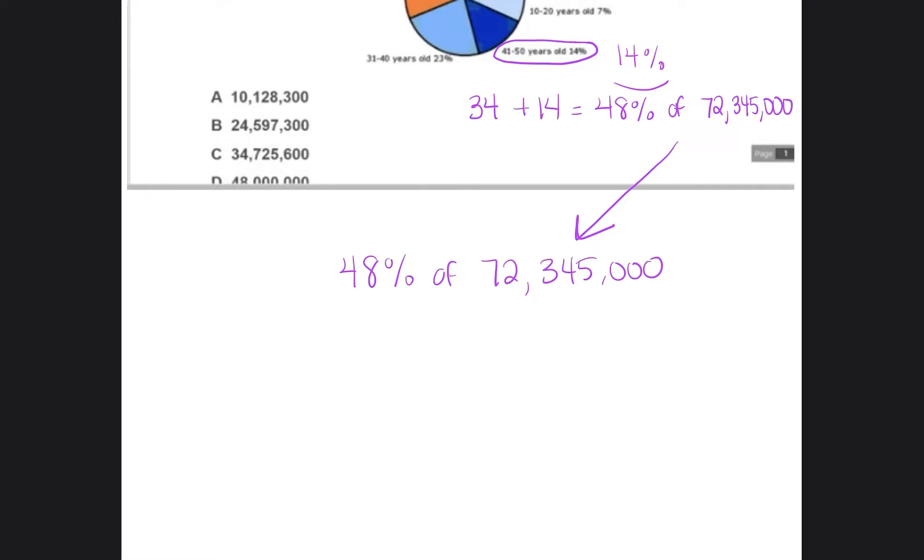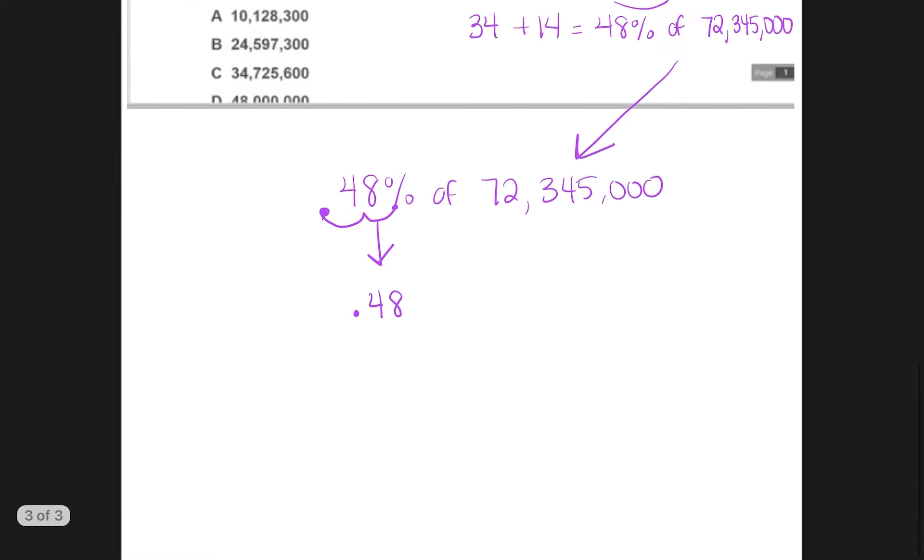So 48% of 72,345,000. So how do we find the percent of a number? It's a very simple way to do it. First, we need to change this 48% into a decimal. 48% into a decimal is you just start right here at the percentage sign and then move the decimal over to the left. So 48% as a decimal is 0.48. Of we change of to a multiplication symbol. And then we keep this number the same 72,345,000.